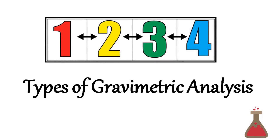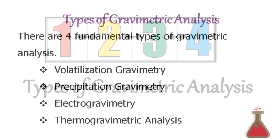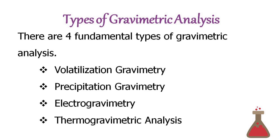Now, let us discuss the types of gravimetric analysis. The first one is volatilization gravimetry, the second type is precipitation gravimetry, the third is electrogravimetry, and the fourth is thermogravimetric analysis. These are the four fundamental types. In the coming modules, all the experiments will be based on precipitation gravimetry. Thank you.